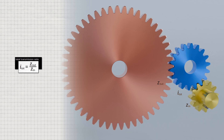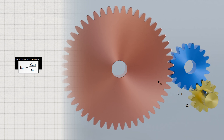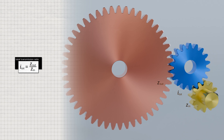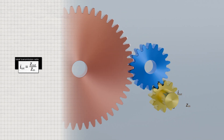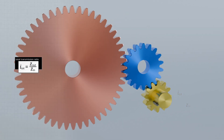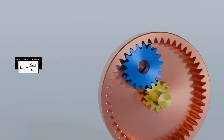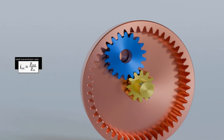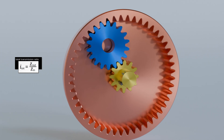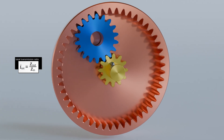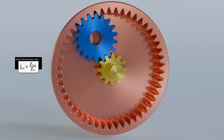This fact will become important later on. In principle, an internal gear can be used instead of the external gear. As long as the ring gear has the same number of teeth as the external spur gear, the overall transmission ratio will not change. Only the direction of rotation of the output gear is reversed.